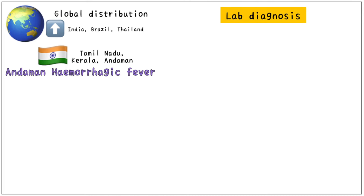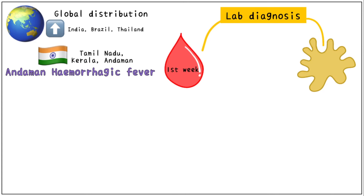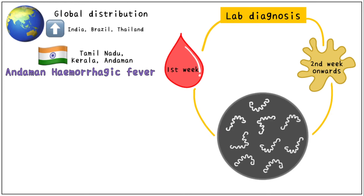For laboratory diagnosis of Leptospirosis, blood samples are used in the first week. From the second week onwards, the organisms disappear from the blood and appear in the urine, so urine samples are used for diagnosis.